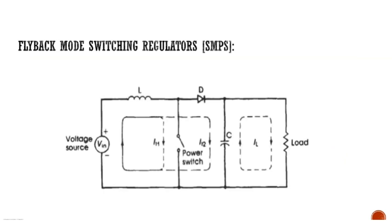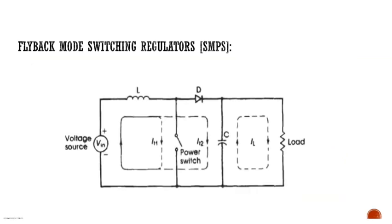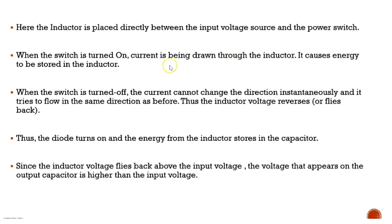The second type of SMPS is the flyback mode SMPS. In the flyback mode circuit diagram, the inductor is placed between the source and the power switch, so the power switch is now in parallel. When the switch is on, current is drawn through the inductor, causing energy to be stored in it. The closed path includes the source, the inductor, and the switch.